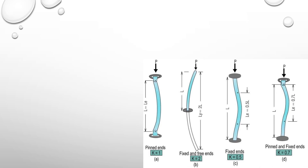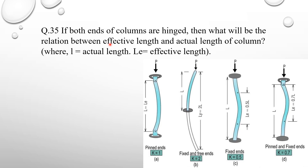Based on the effective length figure: for both ends pinned (hinged), the effective length is L. For a cantilever beam (one end fixed, other end free), effective length is 2L. For both ends fixed, effective length is L/2. For one end fixed and other end hinged, effective length is L/√2. Question number 35: if both ends of a column are hinged, the effective length equals the actual length L, so option number 2 is correct.